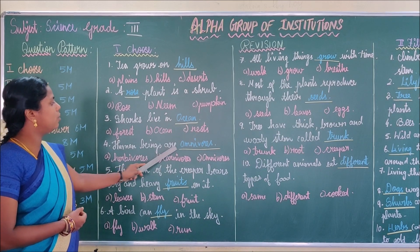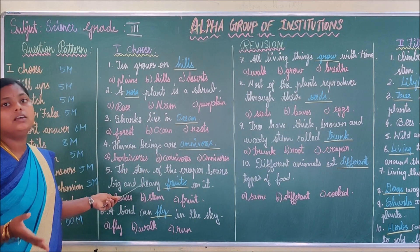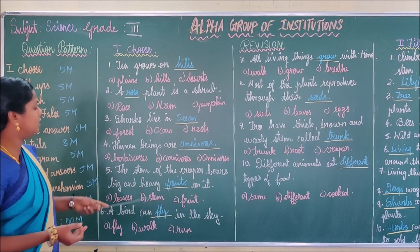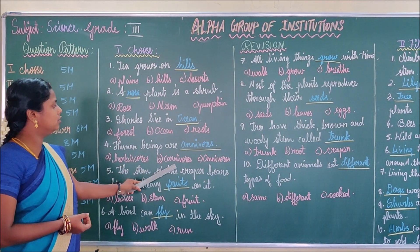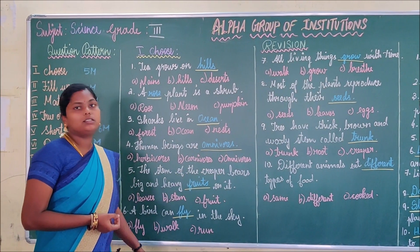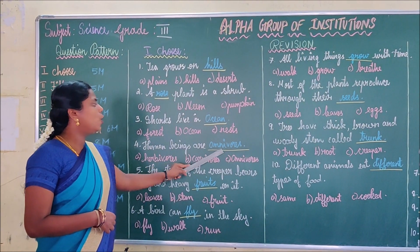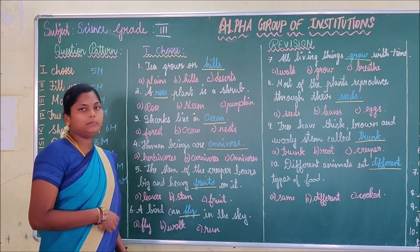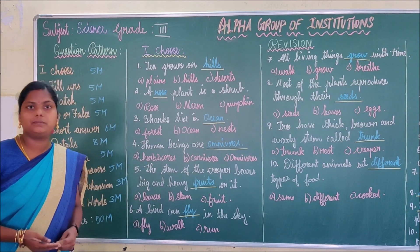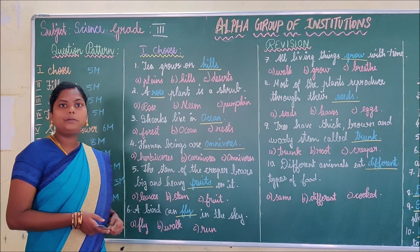Next question: Human beings are blank. We have classified living things into 3 categories — herbivores, carnivores, and omnivores. Human beings are omnivores because we eat both vegetables and meat.